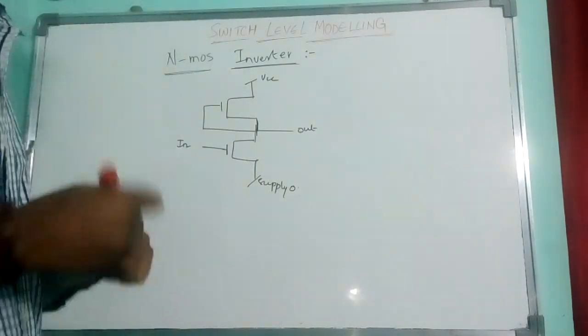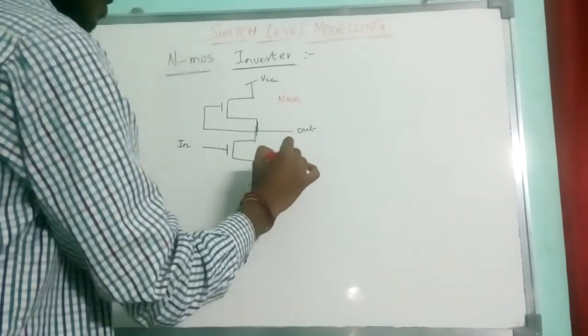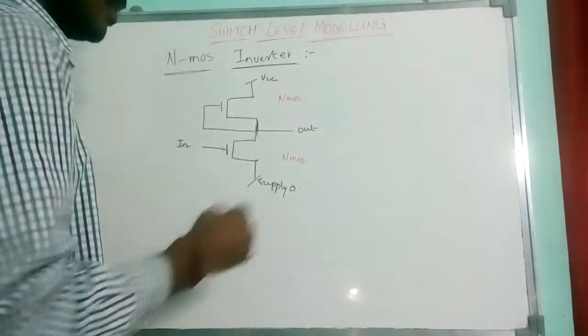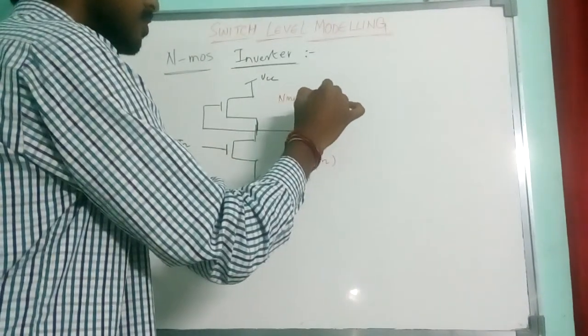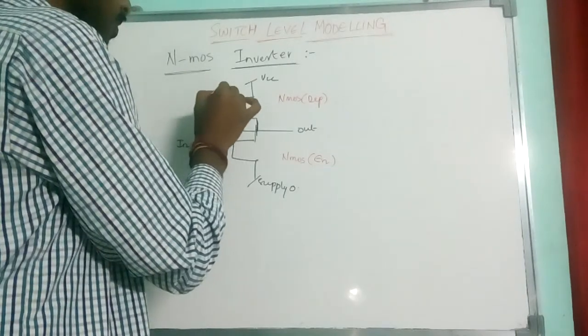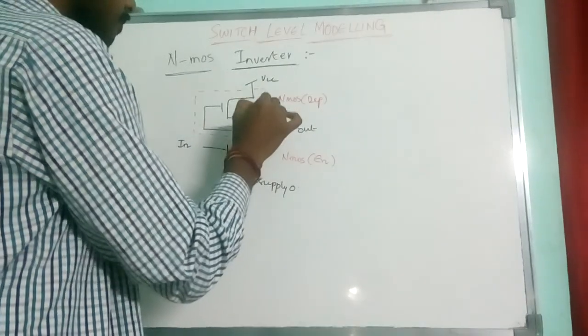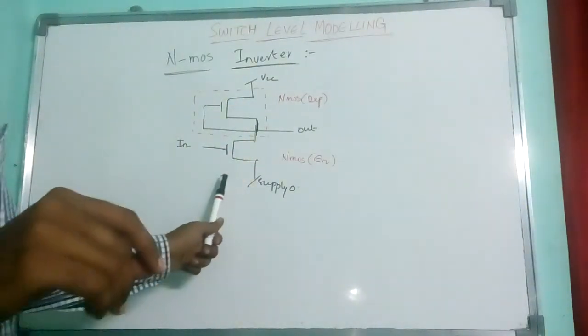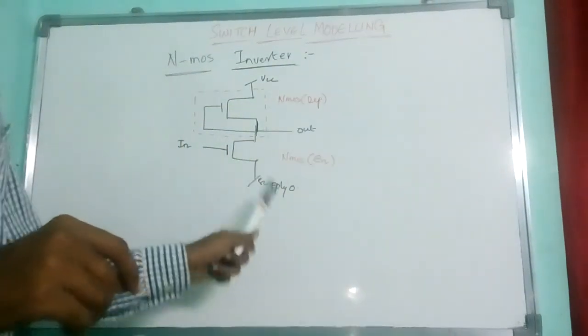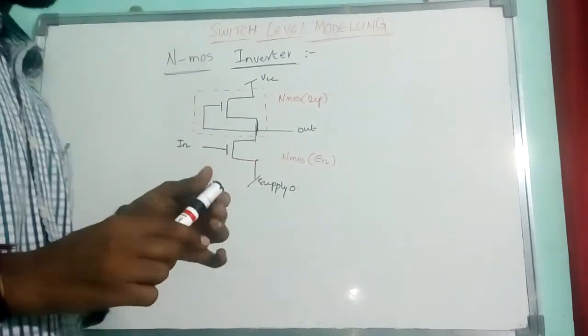Both the transistors are NMOS, but the only difference is this is enhancement mode MOSFET and this is depletion mode MOSFET. Here the channel is not yet formed, but here the channel is already formed in depletion mode region.